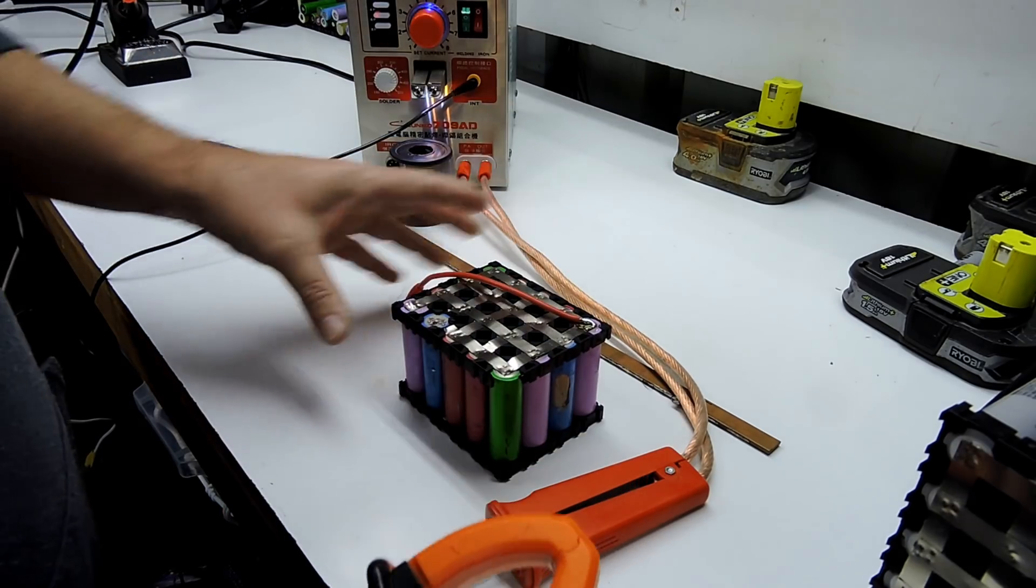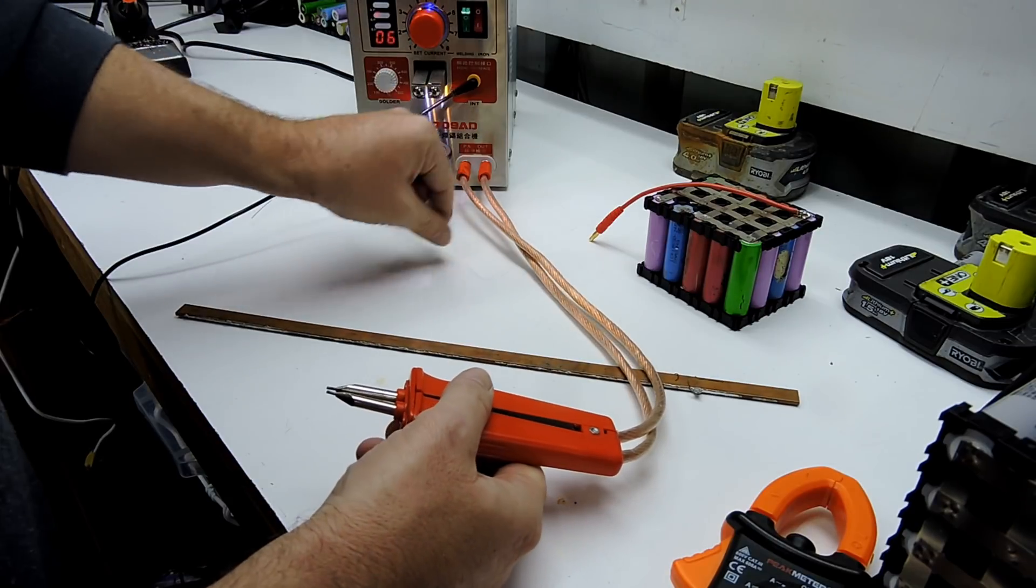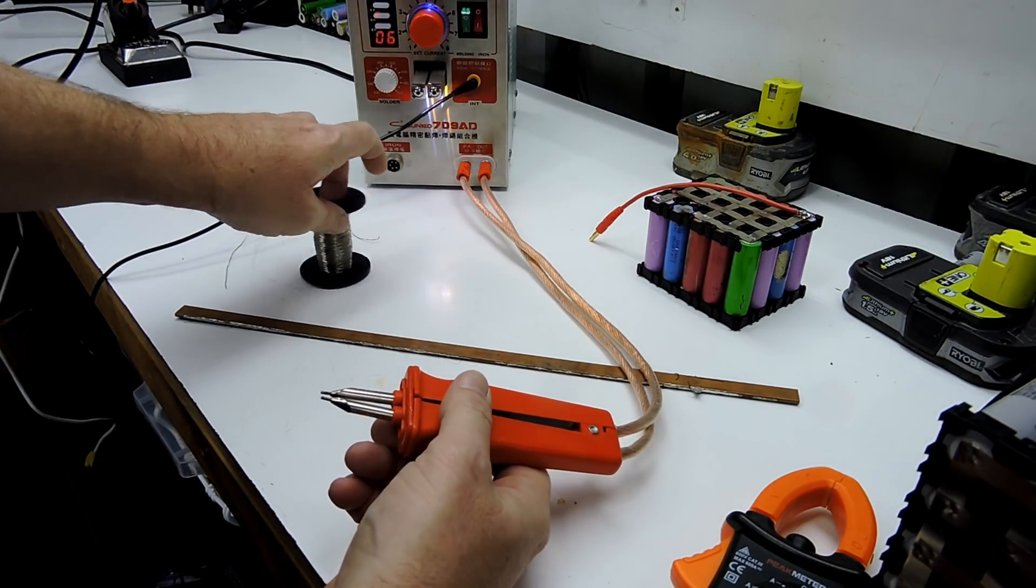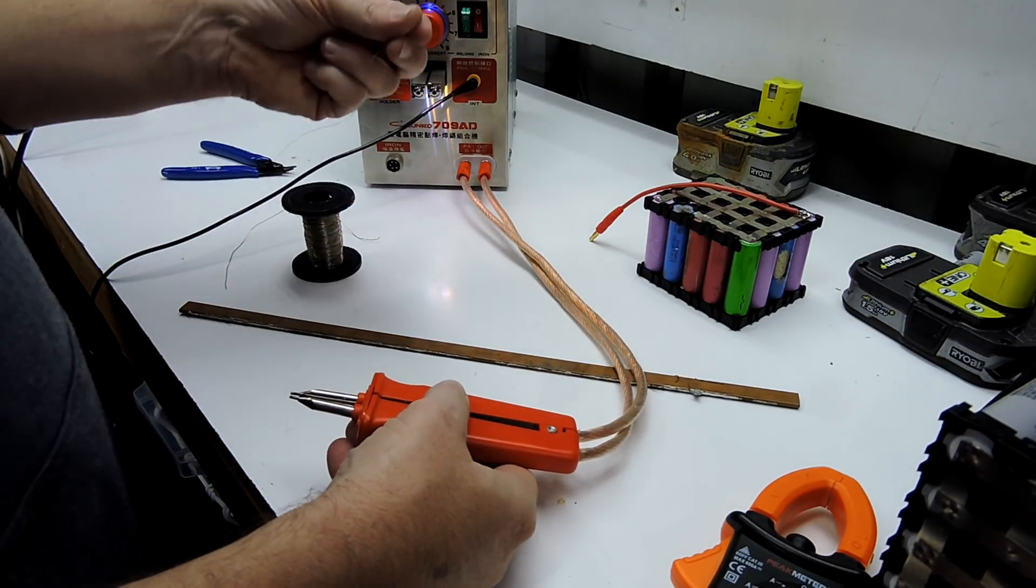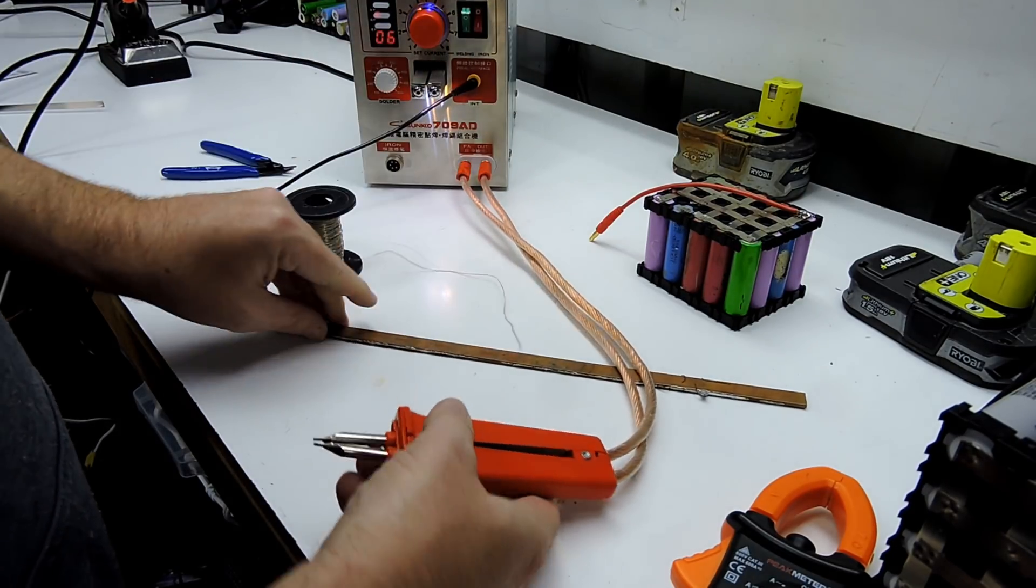That proves that I can't spot weld with the 709AD fuse wire or even indeed copper wire to a copper bus bar. And that copper bus bar...